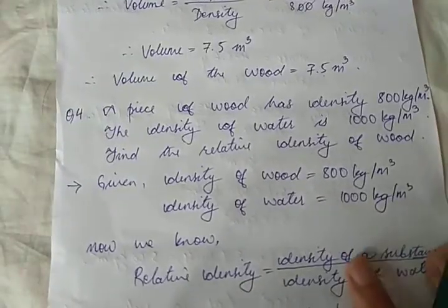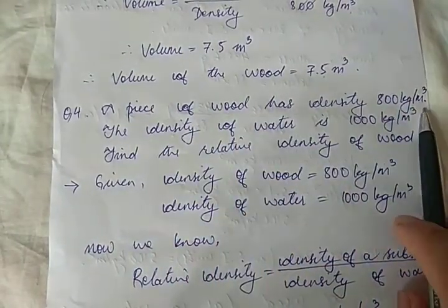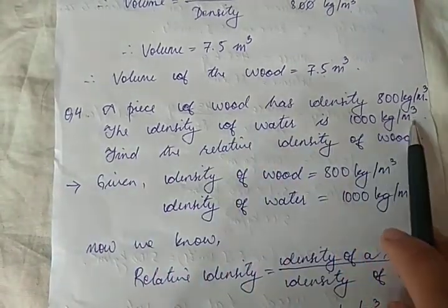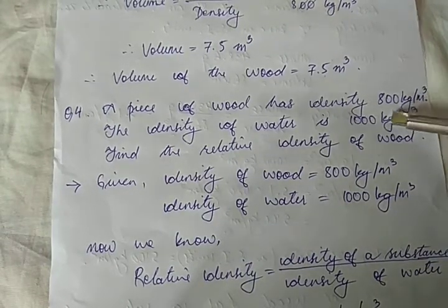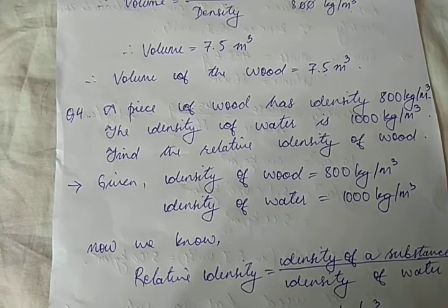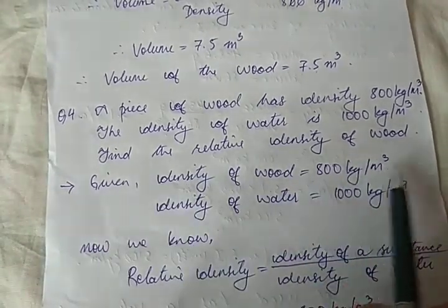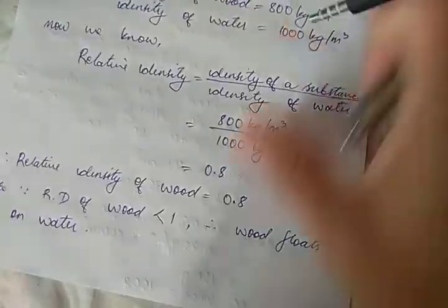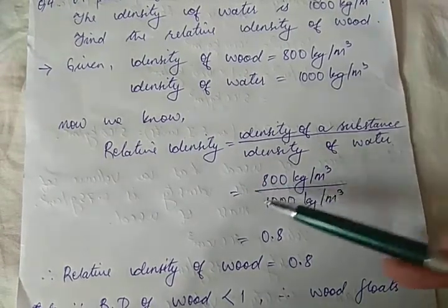Problem 4: A piece of wood has a density of 800 kg/m³. The density of water is 1000 kg/m³. Find the relative density of wood. This is straightforward. Given: density of wood = 800 kg/m³, density of water = 1000 kg/m³. Relative density = density of substance ÷ density of water.